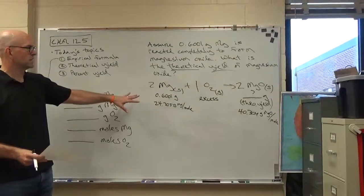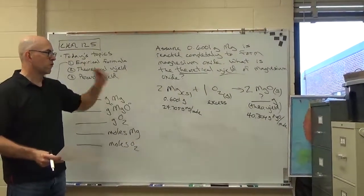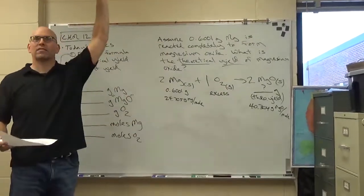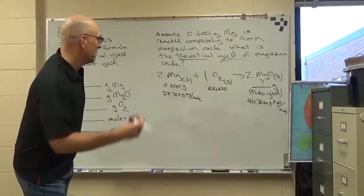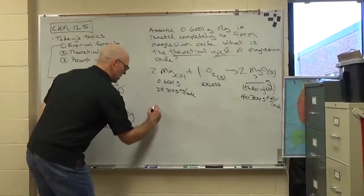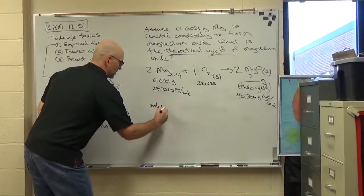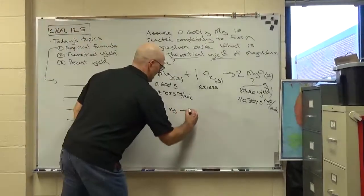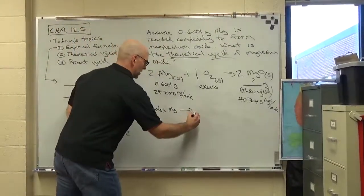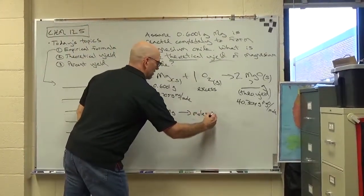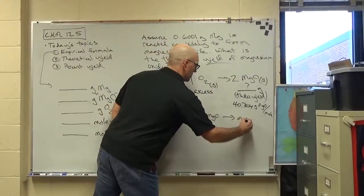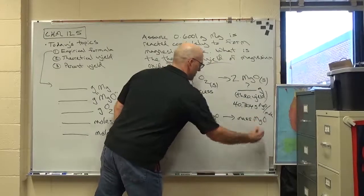So we've got everything we need. Now if you've done these before, you know how to do it. Here are the basic steps. I'm going to write it out in one big thing, and then you can see it. Well maybe I'll just write it out in steps. So first step, get your moles of magnesium. Second step, get your moles of magnesium oxide. Last step, mass of magnesium oxide.